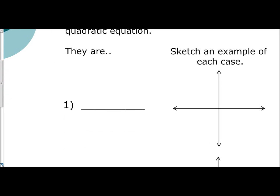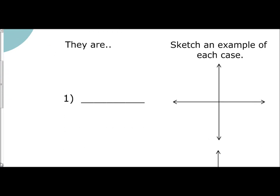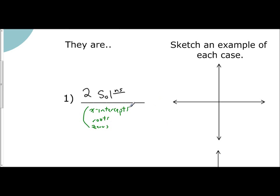The first outcome — and this is the most common case — is that there are two solutions. Two solutions means there are going to be two x-intercepts, two roots, and two zeros. Remember, all of these mean the same idea. Two solutions means two x-intercepts, which are your roots, which are also your zeros.